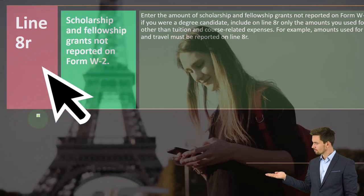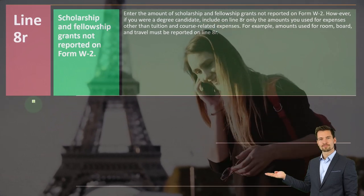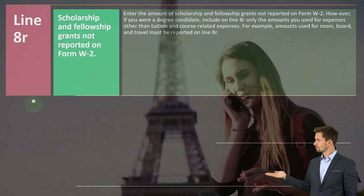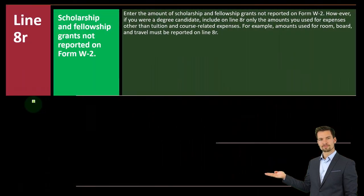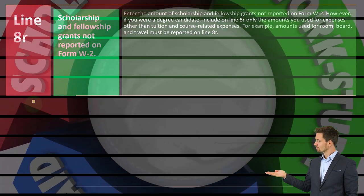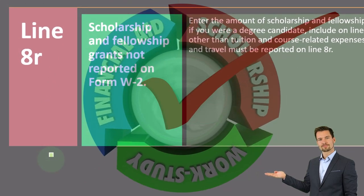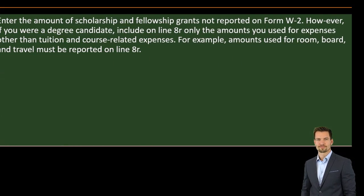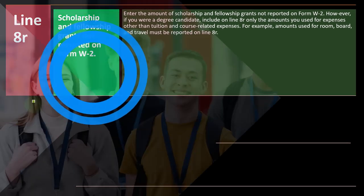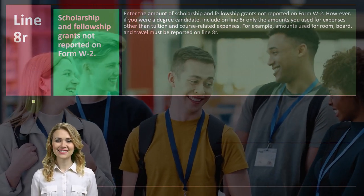It depends on what you used the money for in order to see whether you have to include it in income. If it's included in income, that's generally bad — we want to be able to exclude scholarship money from income. The restrictions are a bit more narrow than some other areas, possibly more restricted than education credits, which we will get to later. So you want to make sure you're spending the money in an appropriate fashion to maximize your benefits from that source.